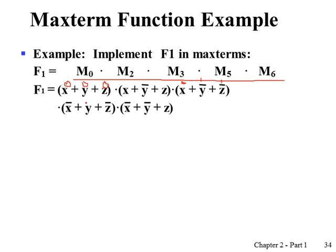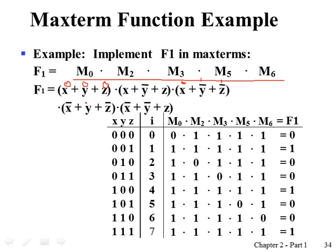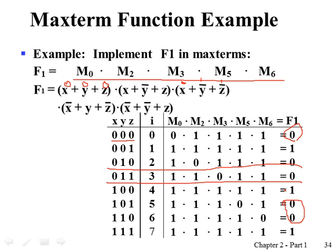The product here represents the AND operation in Boolean logic. You can see the maxterm represents a value of zero in a truth table. So maxterm index zero means the function becomes zero at that truth table row, maxterm index two means the function becomes zero, maxterm index three means the function becomes zero, and maxterm indices five and six mean the function becomes zero. So minterms represent the rows in the truth table where the function becomes one, while maxterms represent the rows where the function becomes zero.